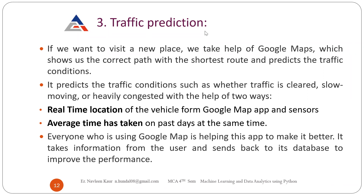Google Maps will always give you the path which is short and less crowded, and it predicts traffic conditions such as whether traffic is cleared, slow-moving, or heavily congested. It does this in two ways. The first is known as real-time location — there are two processes: real-time location from the Google Maps app and census. Based on your current location and your destination, it will predict the time it will take your vehicle to reach there.